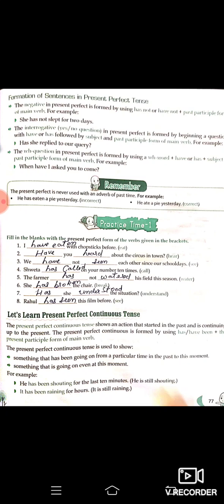Practice Time 1: Fill in the blanks with the present perfect form of the verbs given in brackets. Brackets ke andar present perfect forms diye hue hain to uska hamen use karna hai. Example: 'I have eaten with chopsticks before' — mainne kuch hi der pehle chopsticks se khana khaya tha.